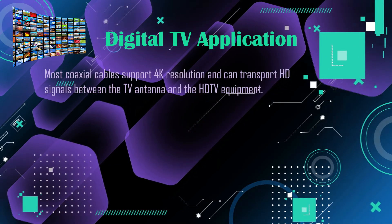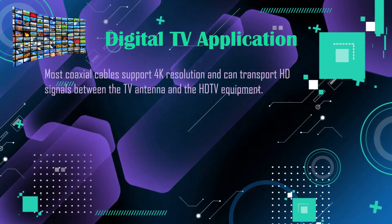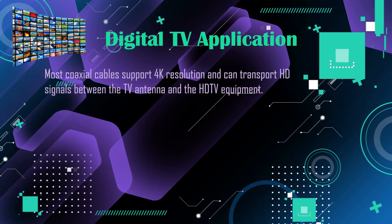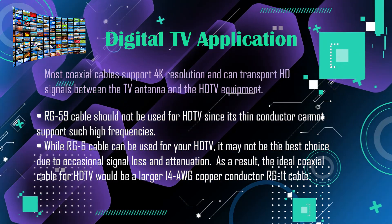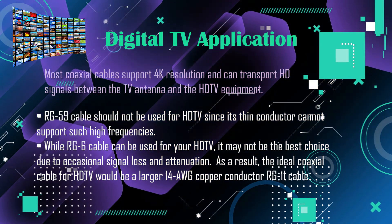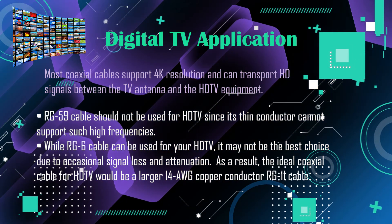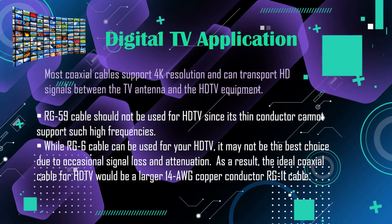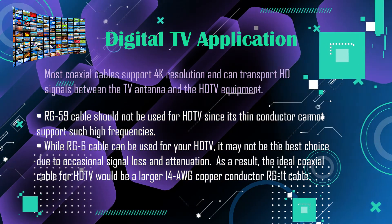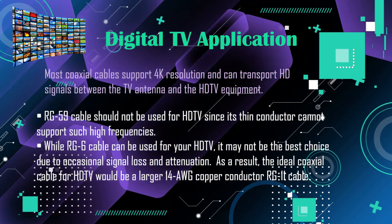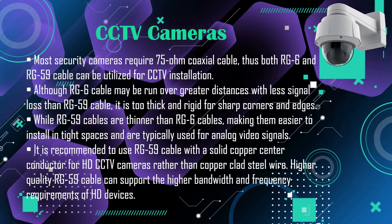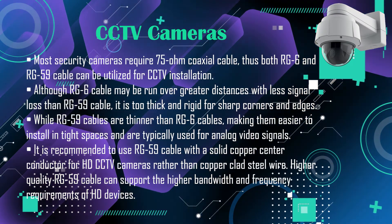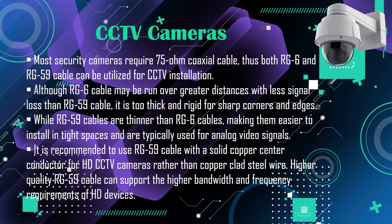Digital TV application: most coaxial cables support 4K resolution and can transport HD signals between the TV antenna and the HD TV equipment. RG59 cable should not be used for HD TV since its thin conductor cannot support such high frequencies. While RG6 cable can be used for HD TV, it may not be the best choice due to occasional signal loss and attenuation. As a result, the ideal coaxial cable for HD TV would be a larger 14 gauge copper conductor RG11 cable.